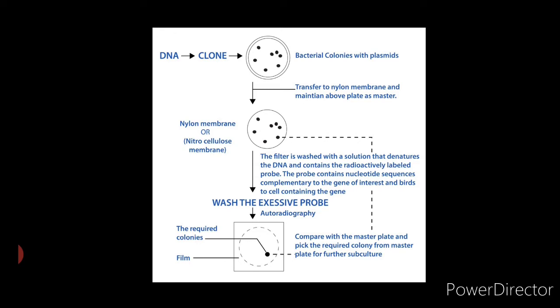At these stages, a probe is added and its hybridization occurs, and signals are observed on an autoradiograph. Now let us understand the procedure involved or the steps involved in colony hybridization.